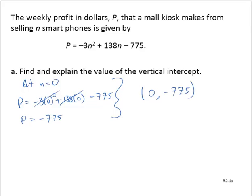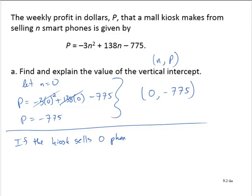So what does this mean? Well, remember that when we write these ordered pairs, our ordered pairs are n comma P. So if the kiosk sells 0 phones, they incur a profit of negative 775 dollars.